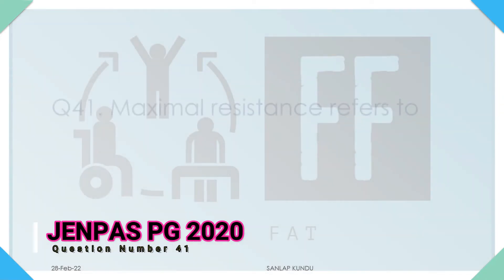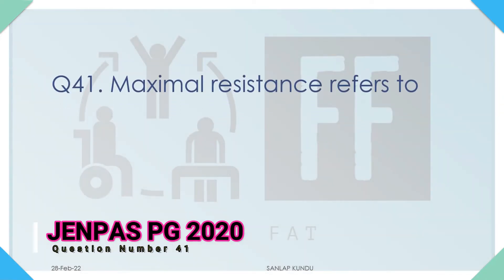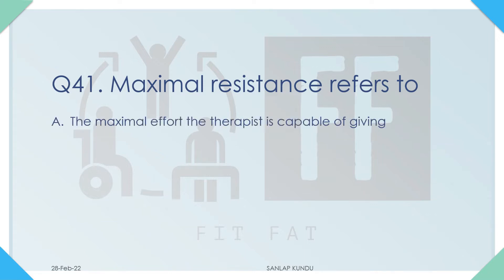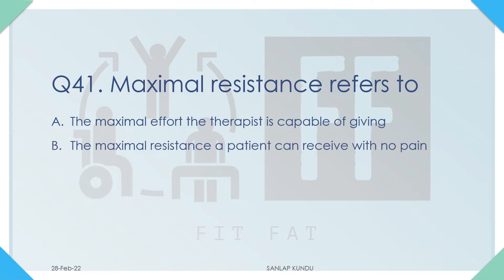JMS PG 2020 question number 41: maximal resistance refers to — now maximal resistance is used in grade 5 of manual muscle testing. Let's see the options. Option A: the maximal effort the therapist is capable of giving. Option B: